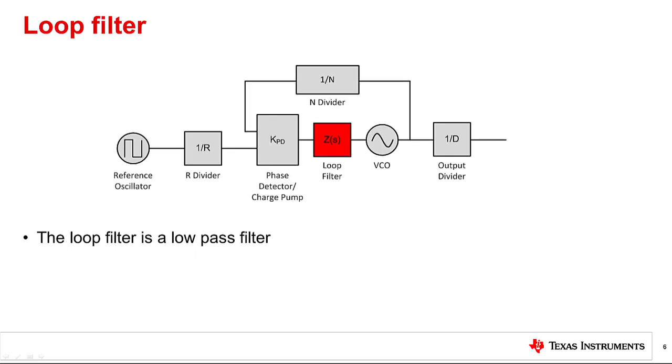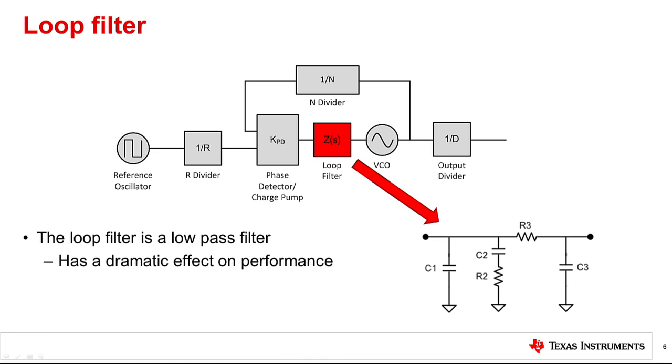The loop filter is a low-pass filter that accumulates correction currents from the charge pump into a voltage, and has a dramatic effect on performance. The loop filter determines the PLL loop bandwidth, which impacts the phase noise, spurs, and switching speed. TI's PlatinumSim software can help design and simulate loop filter performance and the effects of the loop bandwidth.